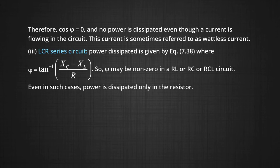Case 3, we take as LCR circuit. Here power dissipated at an angle phi tan inverse X C minus X L divided by R. We can say that phi may be non-zero in LCR circuit or in RL or RC or LCR circuit. Even in such cases, power is dissipated only through the resistor.